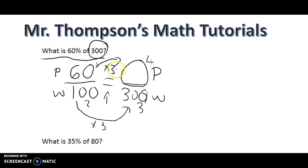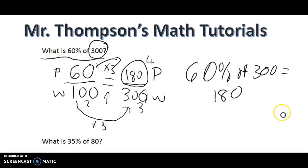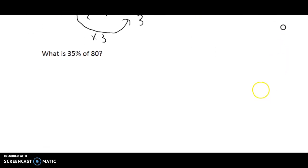This is my first piece of information, my second piece of information, my third, and I'm looking for the fourth. Now what I need to do is I need to figure out how I can make 100 into 300 by multiplying or dividing. In this case, I can just multiply by 3. So when I multiply the bottom by 3, I must also multiply the top by 3. 60 times 3 is 180. So I know that 60% of 300 equals 180.